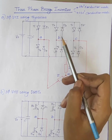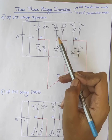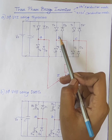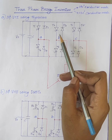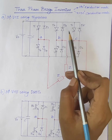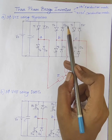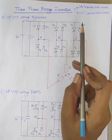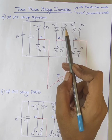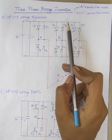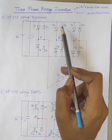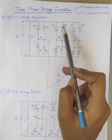The power circuit diagram of 120-degree conduction mode is same as that of 180-degree conduction mode. The difference is that in 120-degree conduction mode, each SCR conducts for 120 degrees, meaning the closing time of the switch is reduced to 120 degrees instead of 180 degrees.